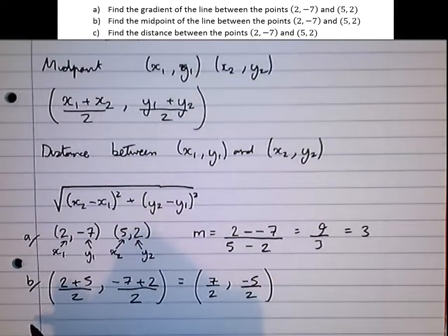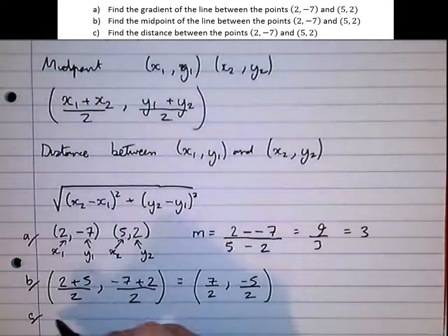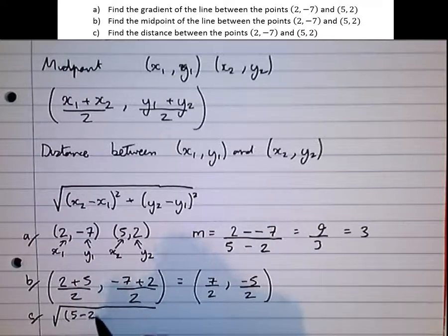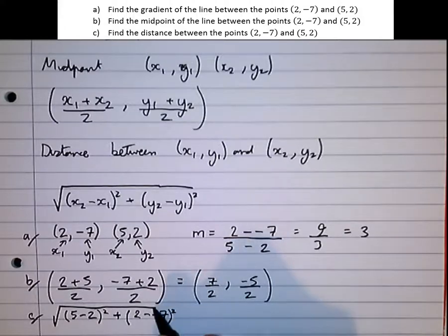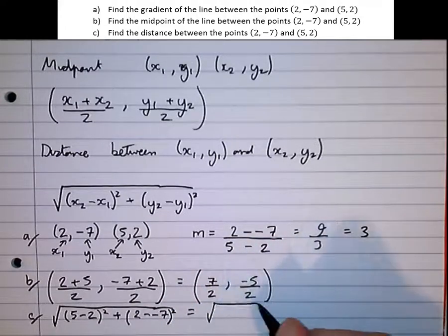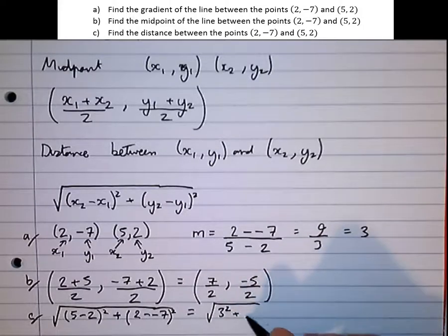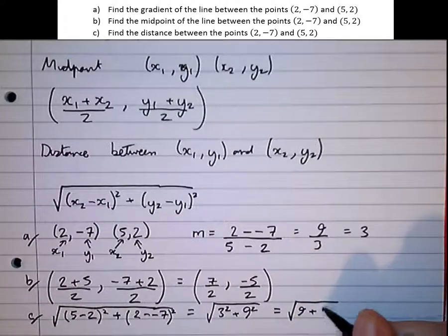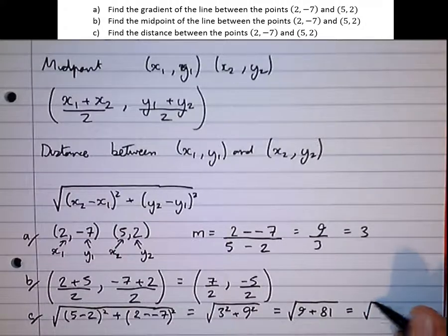Finally, part C, we want to find the distance between the two points. So, square root of the difference between the x values, so that's 5 minus 2 squared, plus the difference between the y values, which is 2 minus minus 7 squared, equals the square root of 3 squared, plus 9 squared, which is equal to the square root of 9 plus 81, which is the root of 90.